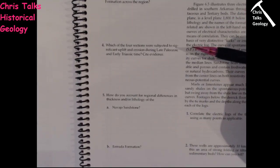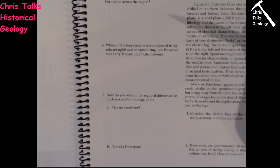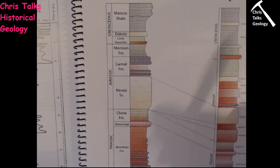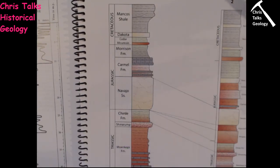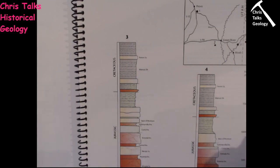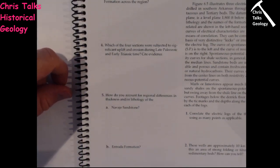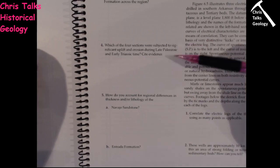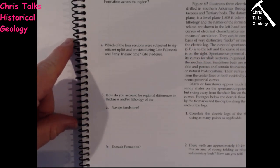Question 4: Which of the four sections was subjected to significant uplift and erosion during the late Paleozoic and early Triassic? The late Paleozoic covers the Carboniferous and Permian, and the early Triassic is the Triassic. When we have erosion in geology, we lose material. You're going to have to work out which of the four columns has suffered the largest amount of erosion — and cite your evidence and explain why.